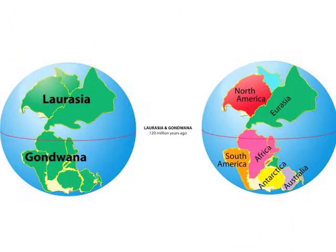Gondwana land included what are now Africa, Antarctica, Australia, India, and South America. Laurasia consisted of what are now Asia, Europe, and North America.